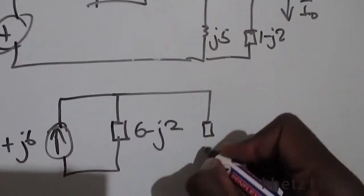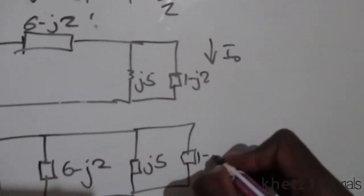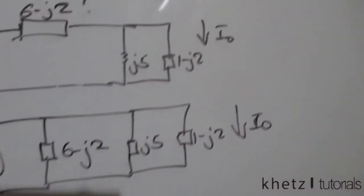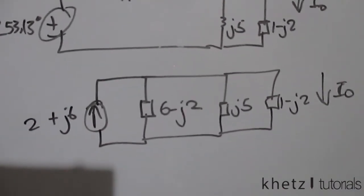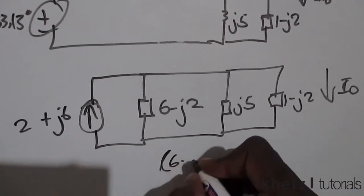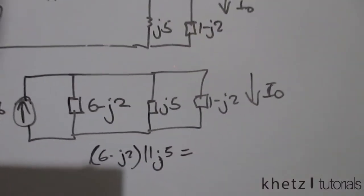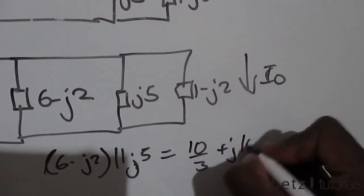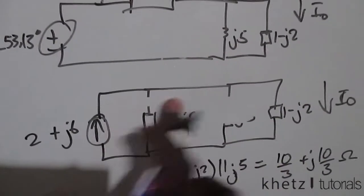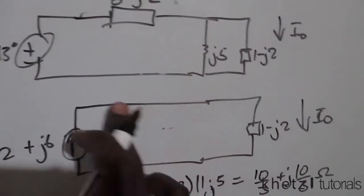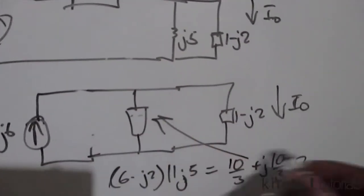We still have the impedance j5 in our circuit, as well as the impedance 1 minus j2 with I_O indicated across it. What we can do is combine 6 minus j2 and j5 in parallel, and the result of that should be 10/3 plus j10/3 ohms. That gives us just one combined impedance with that value.